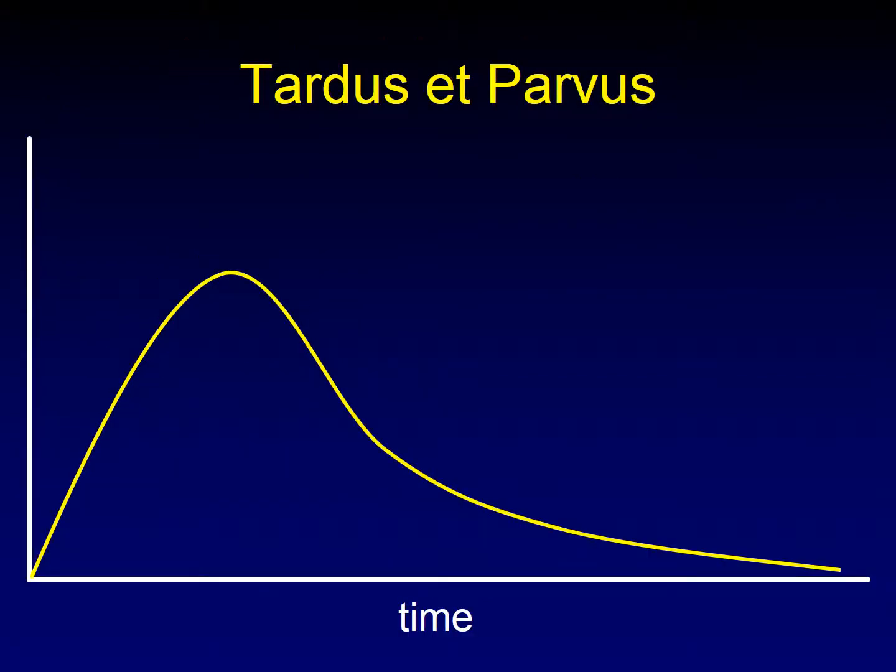How can this change in different parts of the brain? Well, if there is an obstruction to blood flow, then we get a different type of pulsation called a tardus-parvus waveform. Instead of a nice peak and washout, we instead get a slow and small curve — that's what tardus-parvus means. It doesn't go quite as high at its peak and it takes longer to reach that peak.